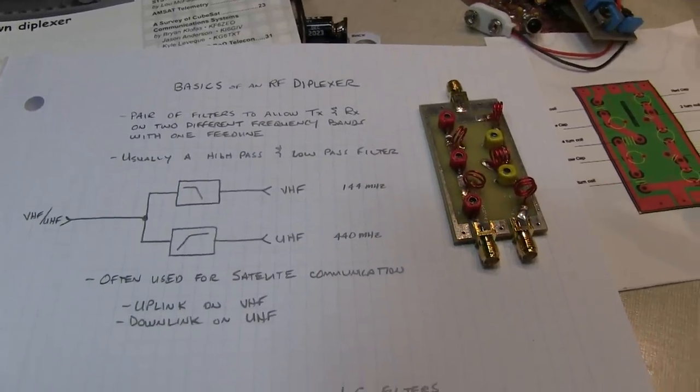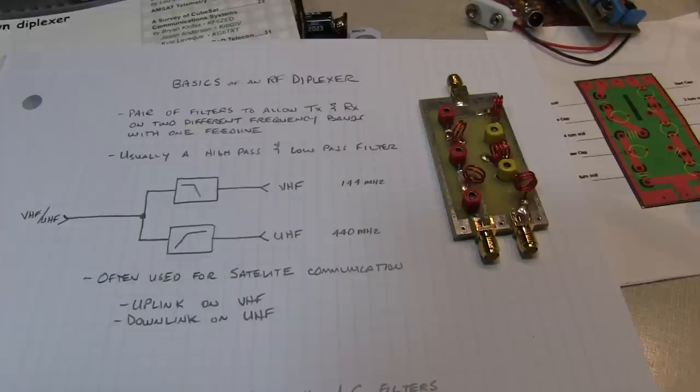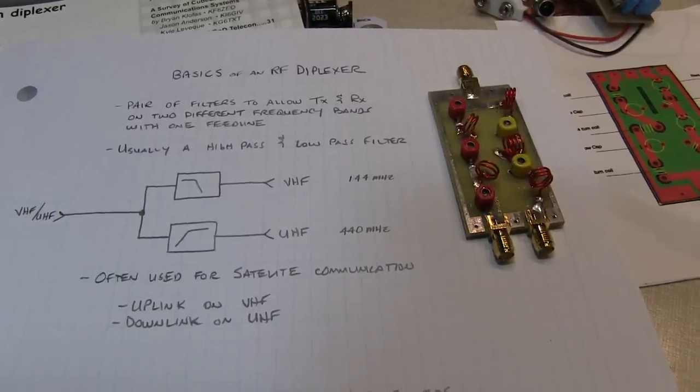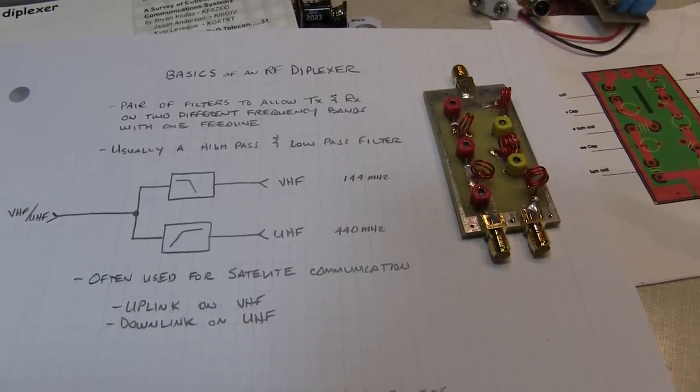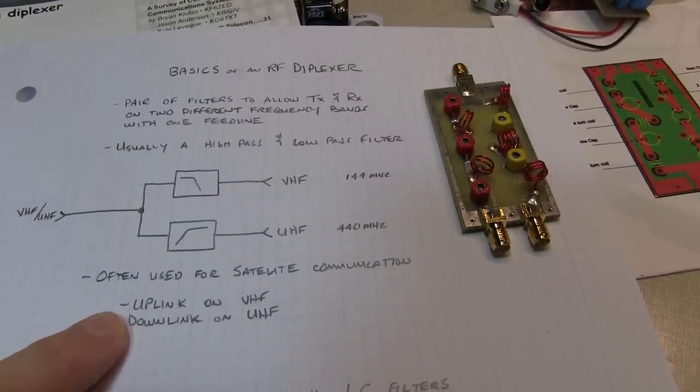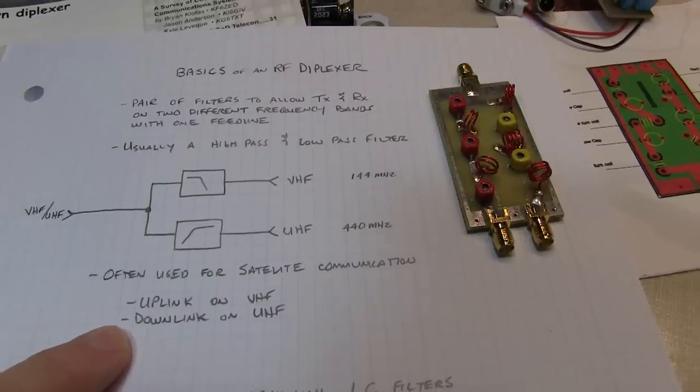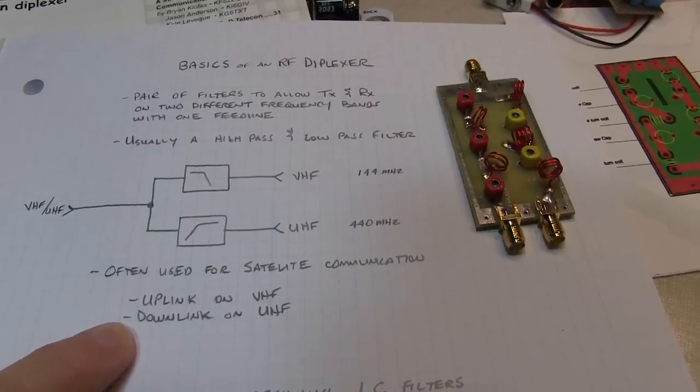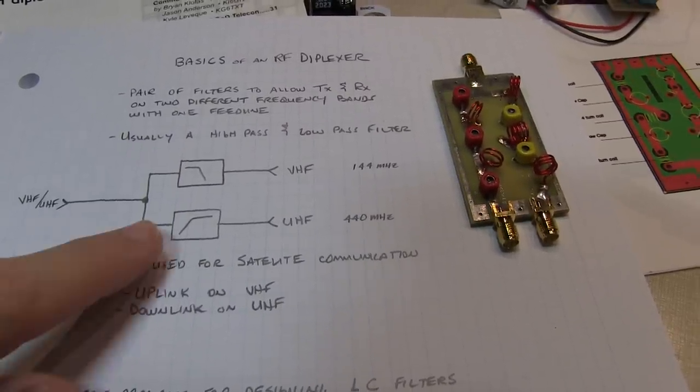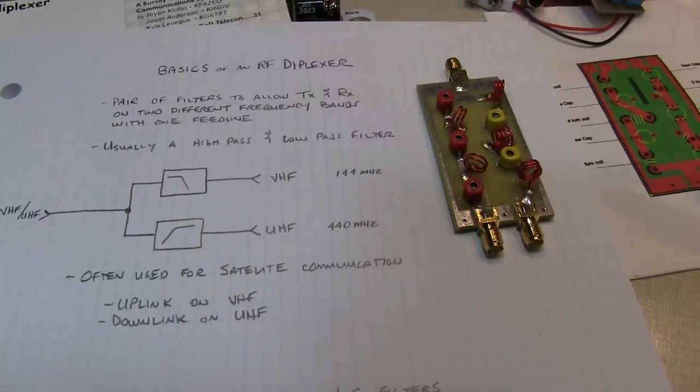This is very commonly used for amateur satellite communications, where oftentimes the uplink from ground to the satellite is on VHF, and the downlink from the satellite back to the ground is on UHF. So you may have different antennas for that purpose.